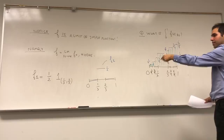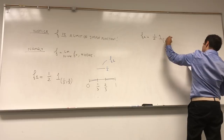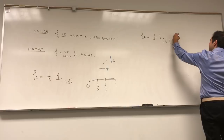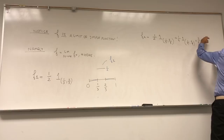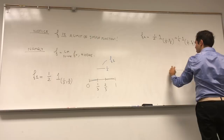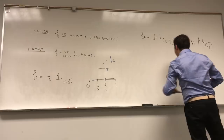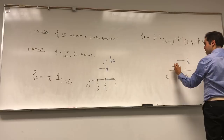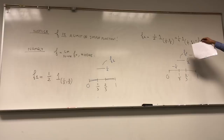Then we build up our function. F_2 is still 1/2 times the indicator function of [1/3, 2/3], plus 1/4 times the indicator function of [1/9, 2/9], plus 3/4 times the indicator function of [7/9, 8/9]. So you have [0,1], take the middle third defined to be 1/2, then on the sub-interval it's 1/4, and on the other it's 3/4. That's your F_2.